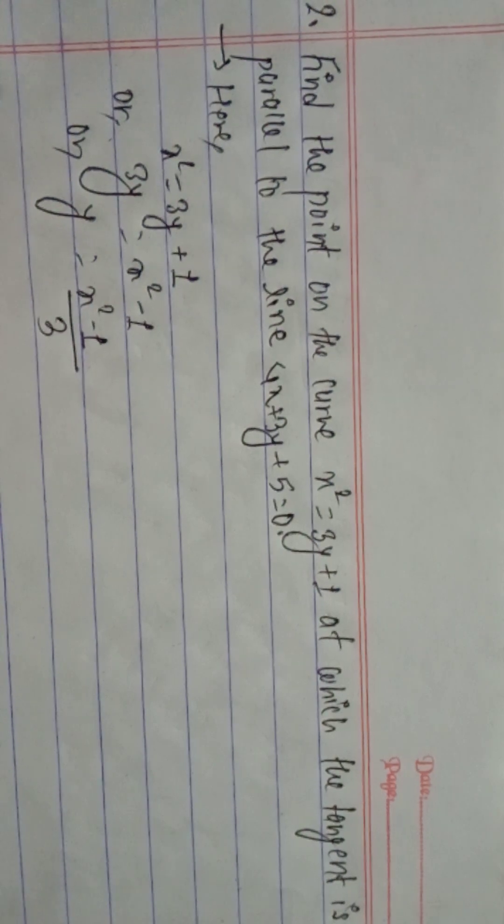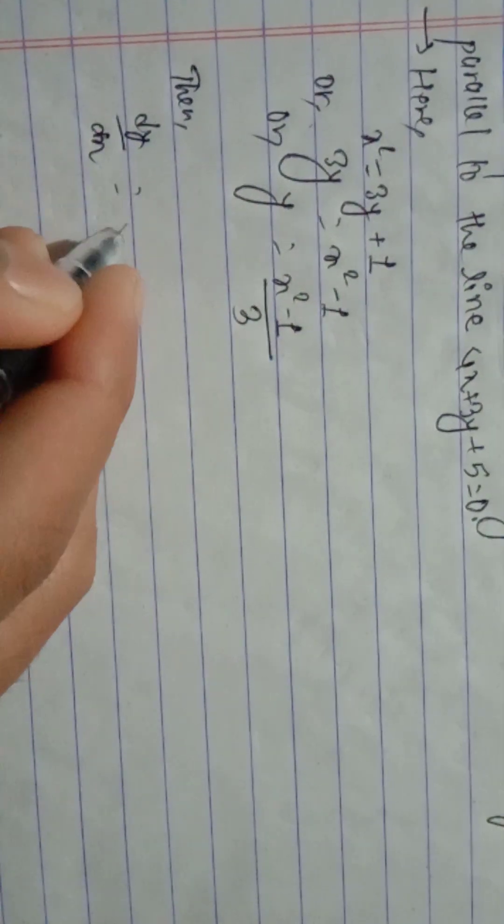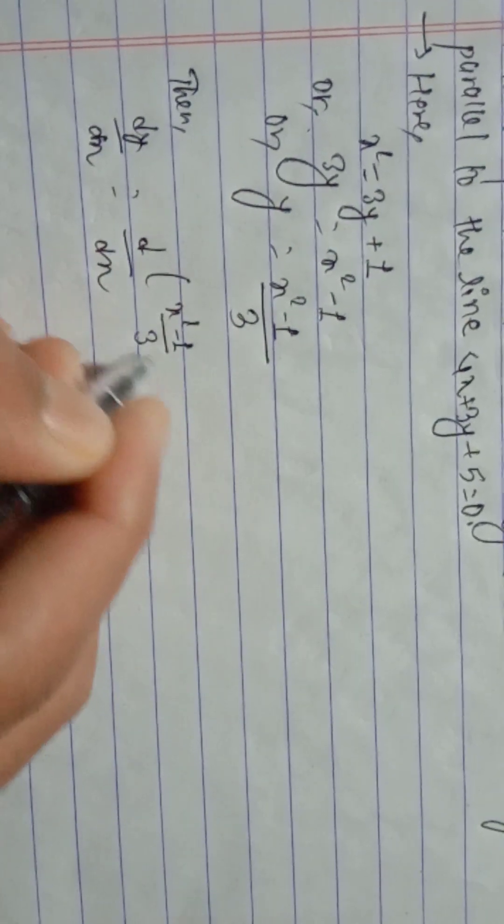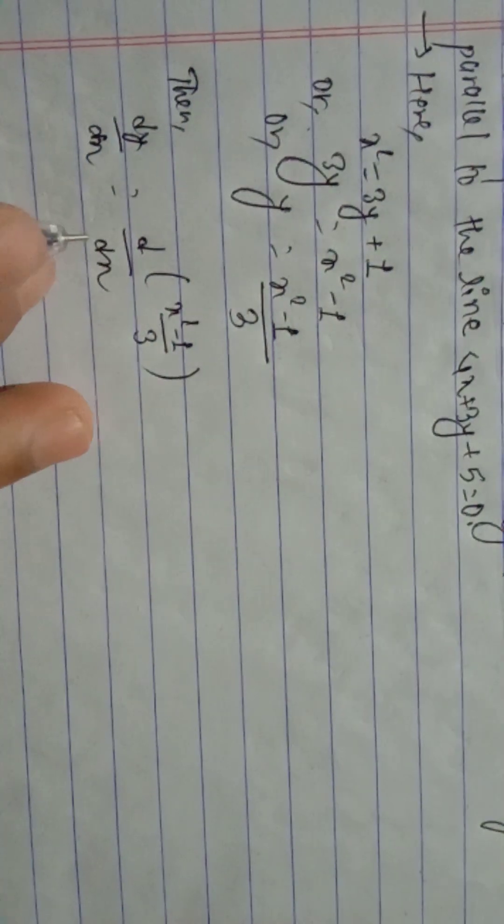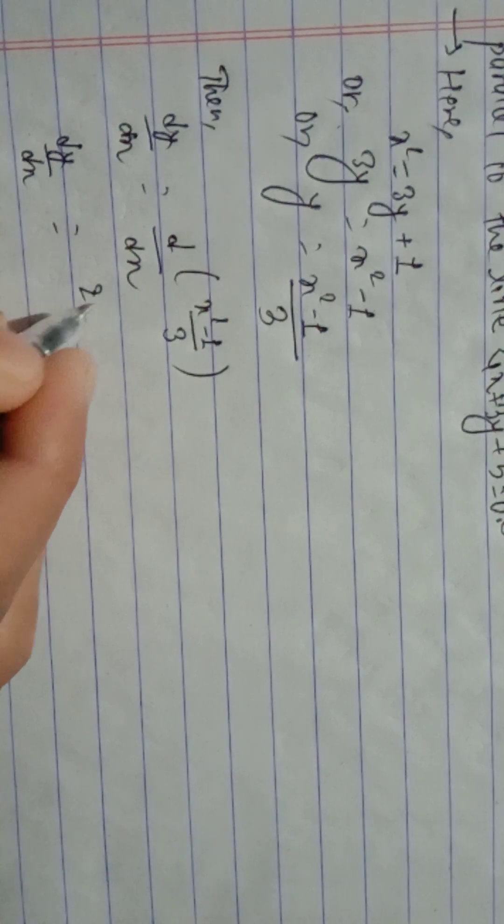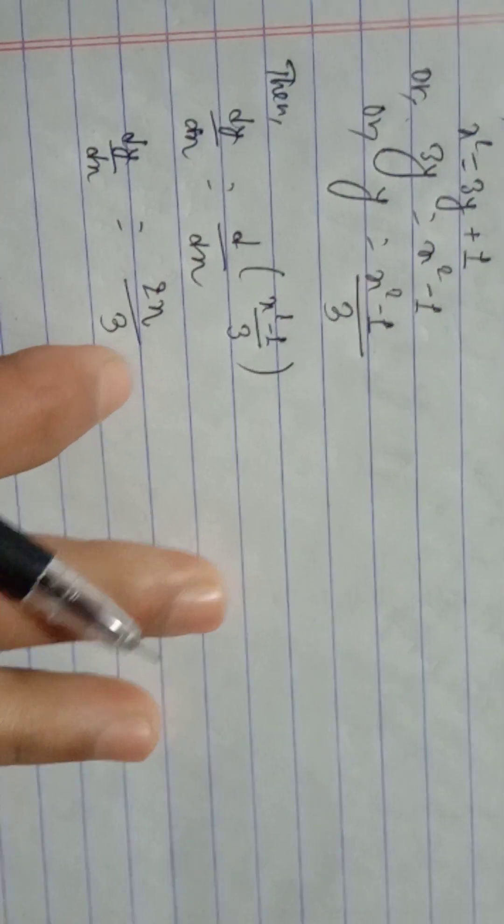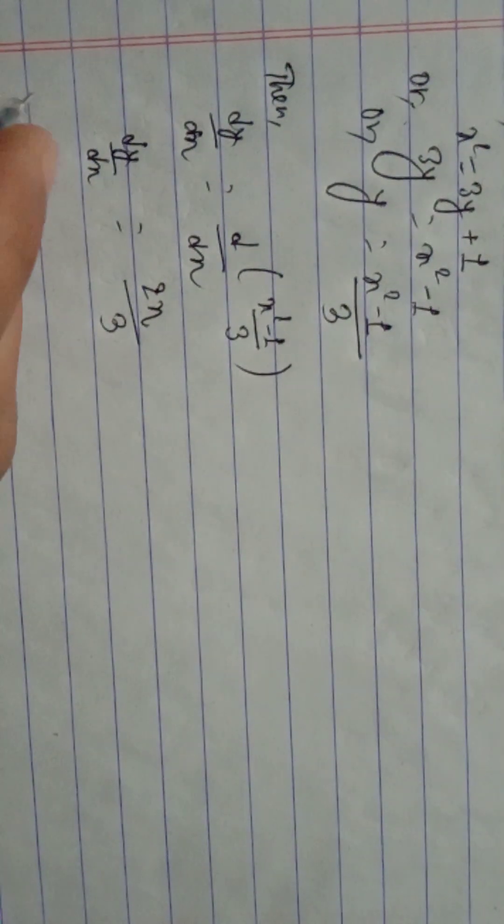Then, dy by dx. Since y equals x square minus 1 divided by 3, dy by dx equals 2x divided by 3.